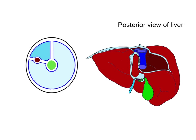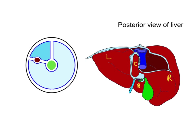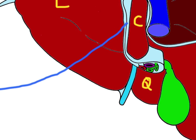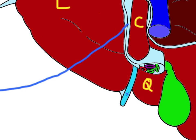In this posterior view of the liver, you can see the right lobe, left lobe, caudate lobe, and quadrate lobe. The blue area represents the lesser omentum, which runs across and attaches to the first part of the duodenum. You can also see on the posterior view the ligamentum teres, and the little bit of the falciform ligament just peeping through at that point.